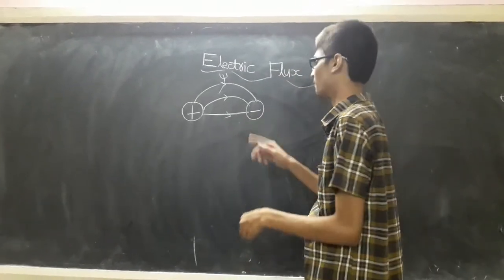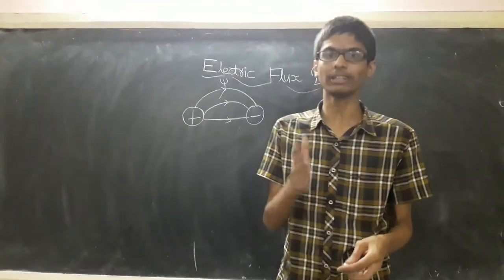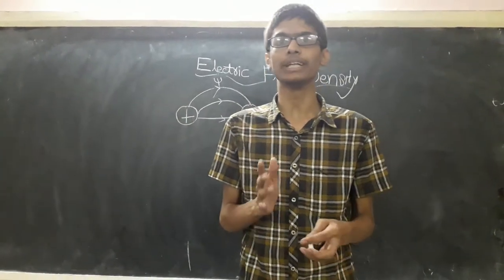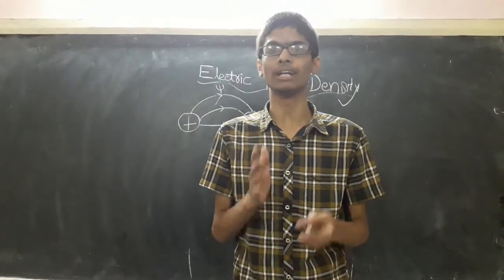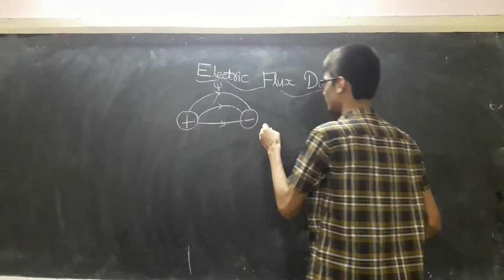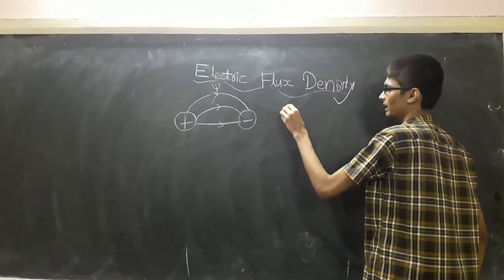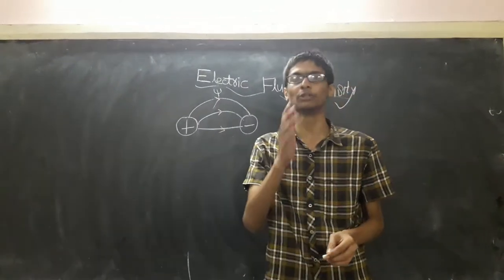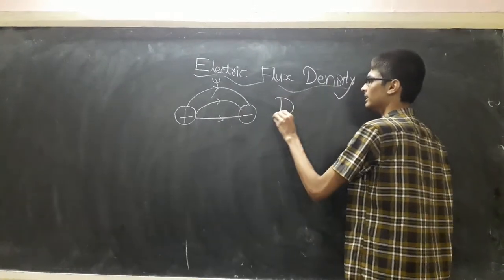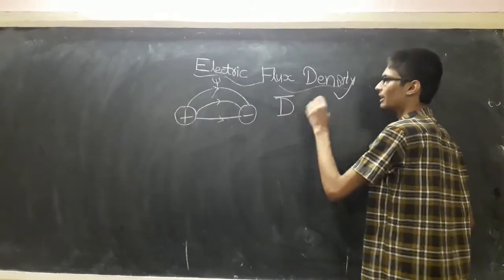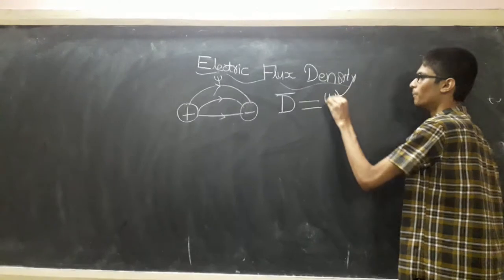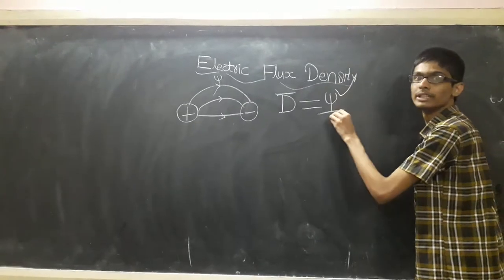Now let us see what is electric flux density. Flux per unit area is called electric flux density. Flux per unit area is denoted by D-bar. So D-bar is equal to electric flux density, which equals flux per unit area.